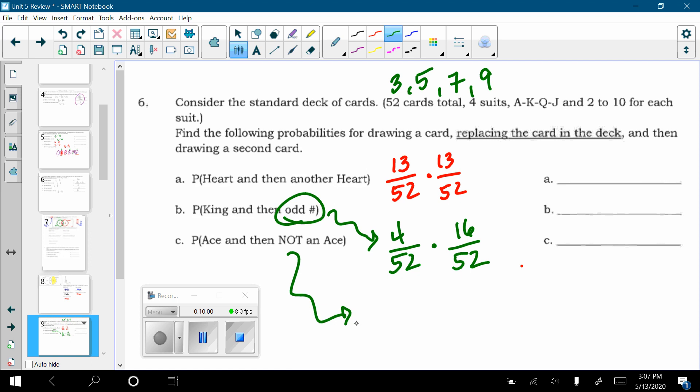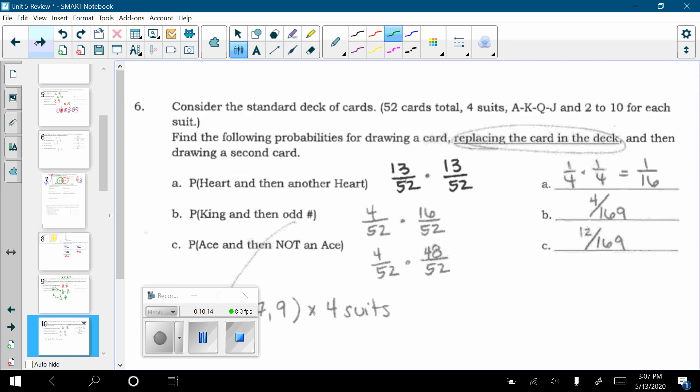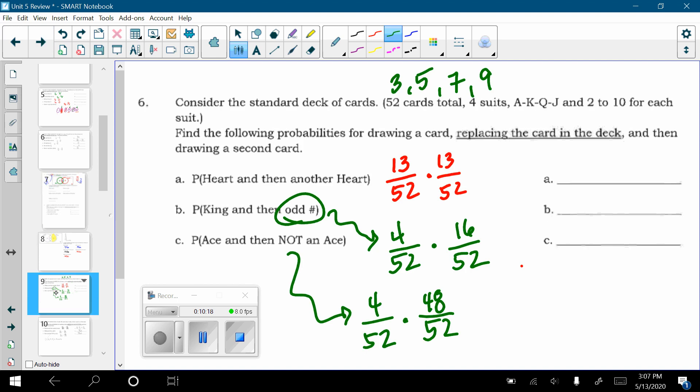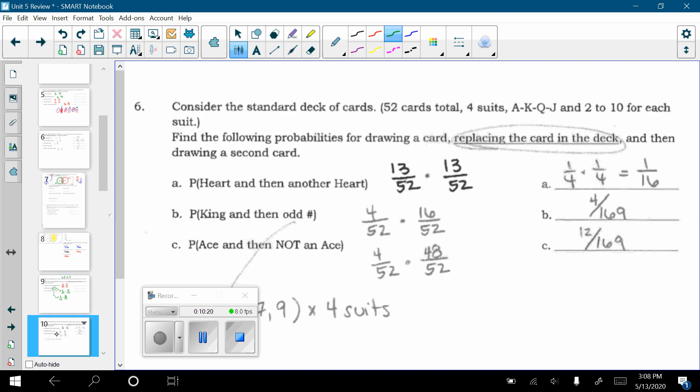The next one, an ace. There is 4 aces in the deck. You put the first card back in. So, you are back to 52 cards. And if there is 4 aces, that means that there is 48 non aces. So, these are my setups. And here are my answers. Right? Same exact numbers just worked up.